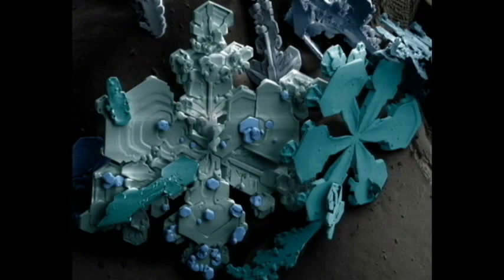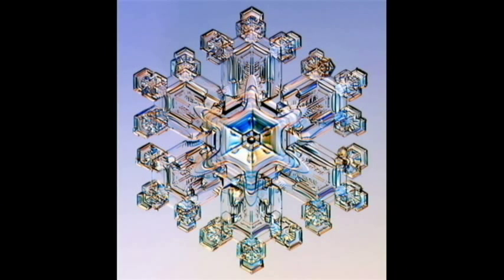Snowflakes begin to form when extremely cold water freezes onto a pollen or dust particle. This creates an ice crystal. As the ice crystal falls to the ground, water vapor freezes onto the primary crystal, building new crystals — the six arms of the snowflake.